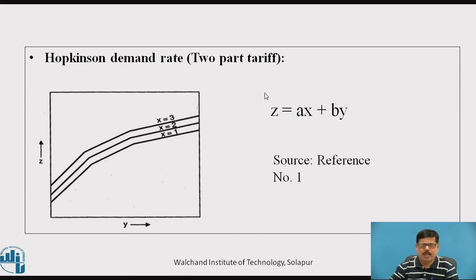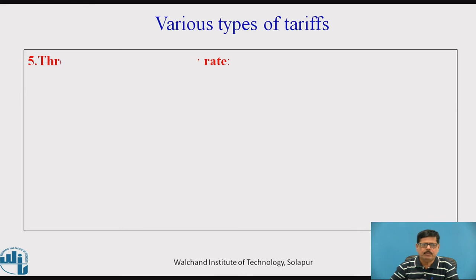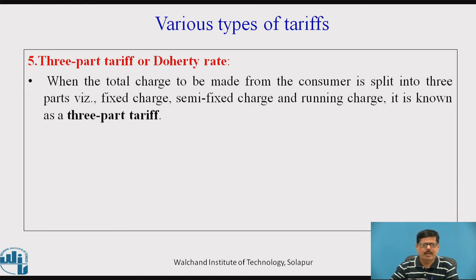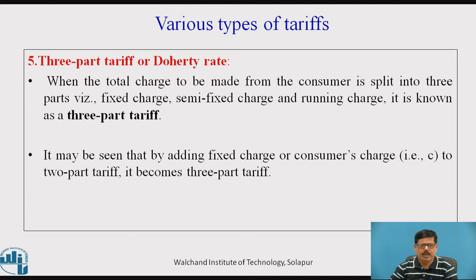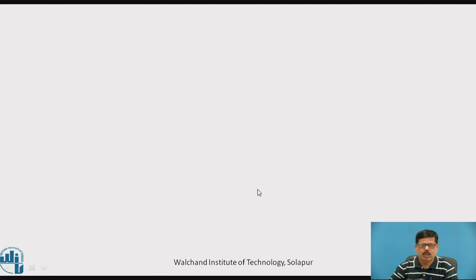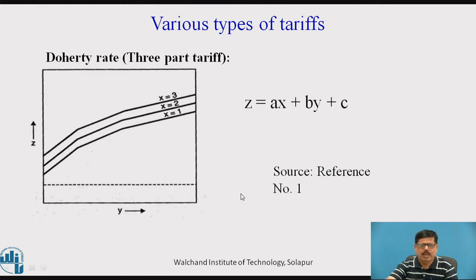The last method is the three-part tariff or Doherty tariff. When the total charge is split into three parts — fixed charge, semi-fixed charge, and running charge — it is known as three-part tariff. It is a modified form of the Hopkinson two-part tariff: by adding a fixed consumer charge C, the two-part tariff becomes the three-part tariff, given by Z = AX + BY + C. This type of tariff is generally used for big consumers.